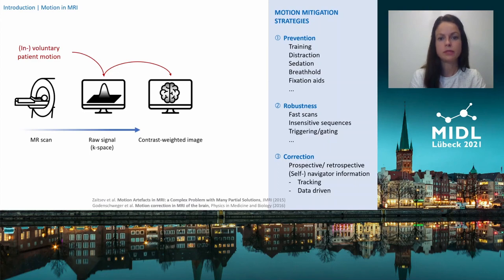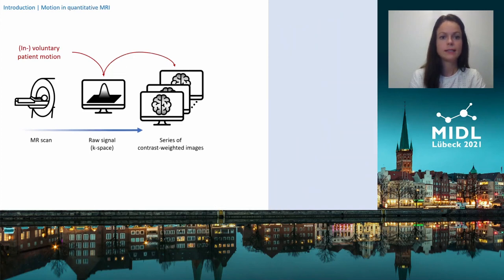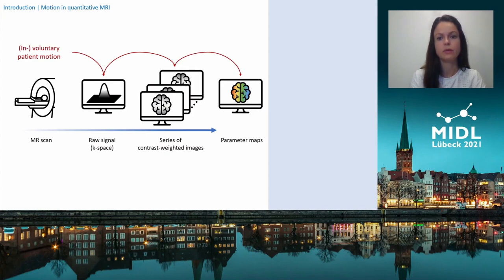Many conceptually different strategies have been developed to address these challenges, starting from motion prevention, through motion-robust or motion-adapted acquisition schemes, to motion correction strategies that aim to estimate and/or correct for the movements, either prospectively or retrospectively. Motion is a problem in more or less all types of MRI exams, but it is amplified in quantitative MRI, because for quantitative parameter mapping, multiple acquisitions are required instead of a single contrast-weighted scan to encode the parameter information of interest. In practice, body motion distorts the entire signal evolution and consequently causes a misquantification of the underlying parameters.